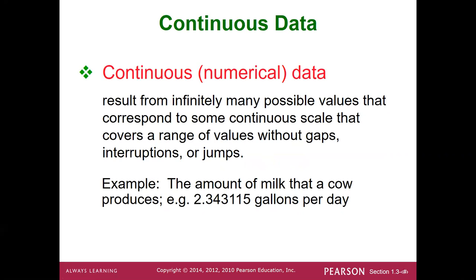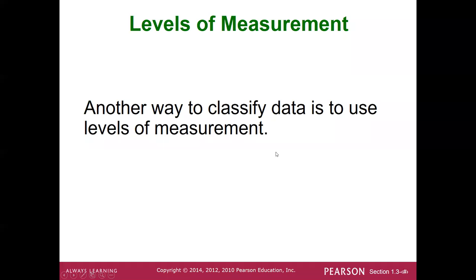Continuous data has an infinite amount of numbers without gaps. For example, milk production can range between two and three gallons — how many numbers exist between two and three? An infinite amount, with no gaps. Similarly, your annual salary starts at zero and goes to potentially infinite values — you cannot count all possible salaries. That's why salary is continuous, while something countable like days of rain is discrete.